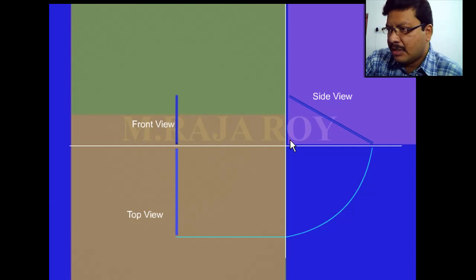No need to rotate, because this point lies on the intersection of x1 y1 and xy. That's why you will get the point here. Then you will get the top view in this way.